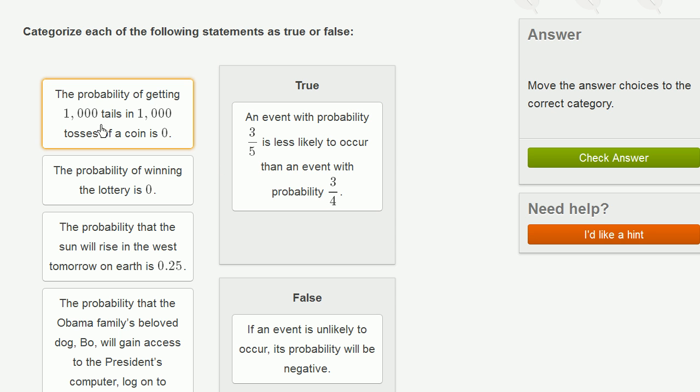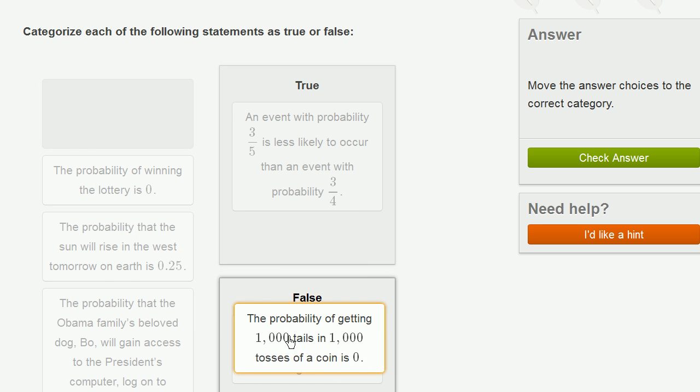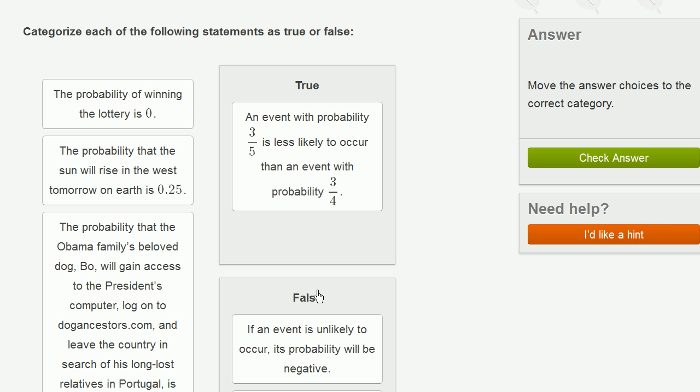The probability of getting 1,000 tails in 1,000 tosses of a coin is 0. Getting 1,000 tails in 1,000 tosses, in future videos we'll actually talk about how to calculate it. It's a very, very low probability, but it still is possible. So the probability is not 0. It could be a very small positive number close to 0, but it is not 0. A probability of 0 means that it is impossible.